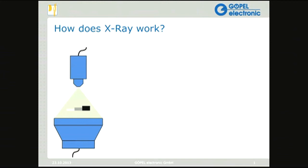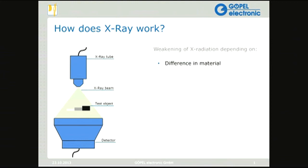How does X-ray work? We start with an X-ray tube or source, which emits X-ray radiation as a beam. We then have a test object — in our case a PCB or electronic assembly — and a detector that detects the X-ray radiation and converts it into a usable, visible image. The weakening of X-ray radiation depends on differences in material density and thickness.